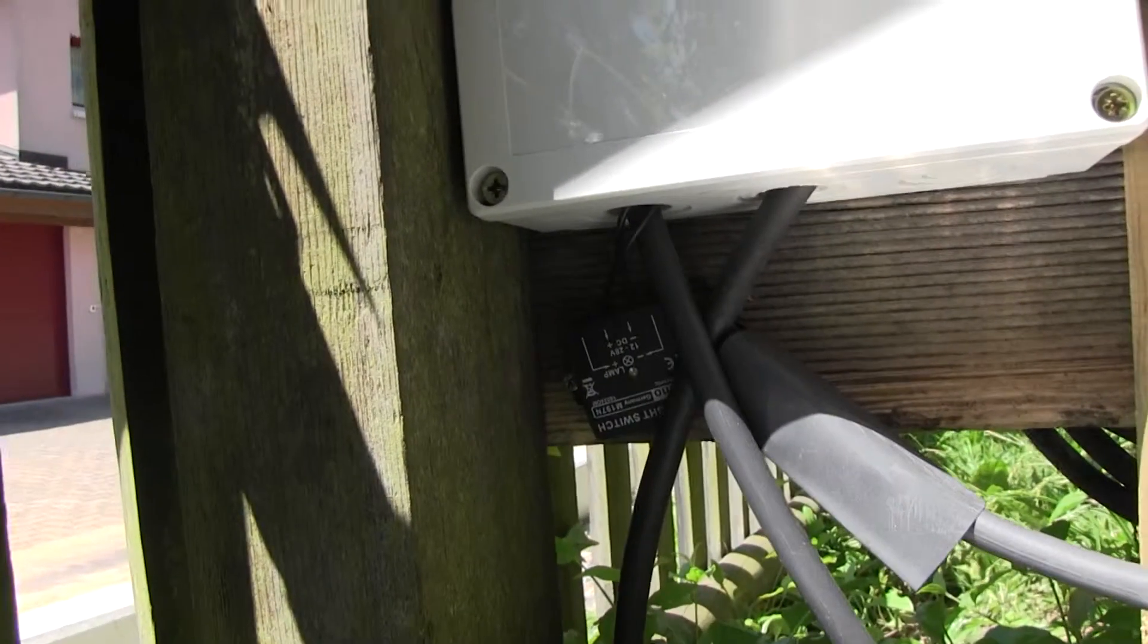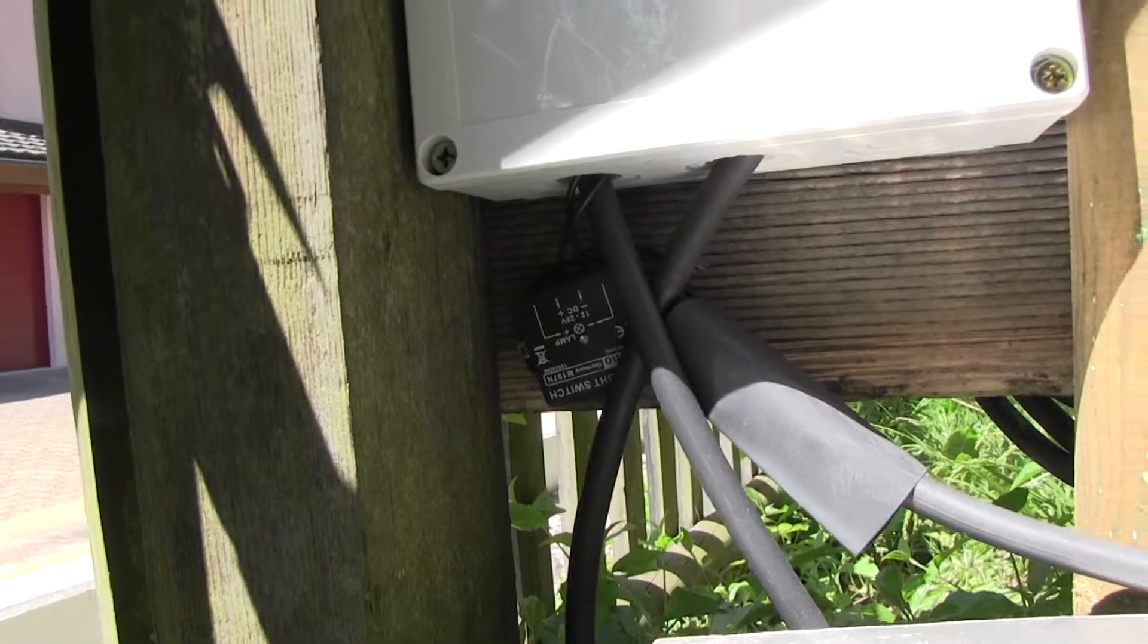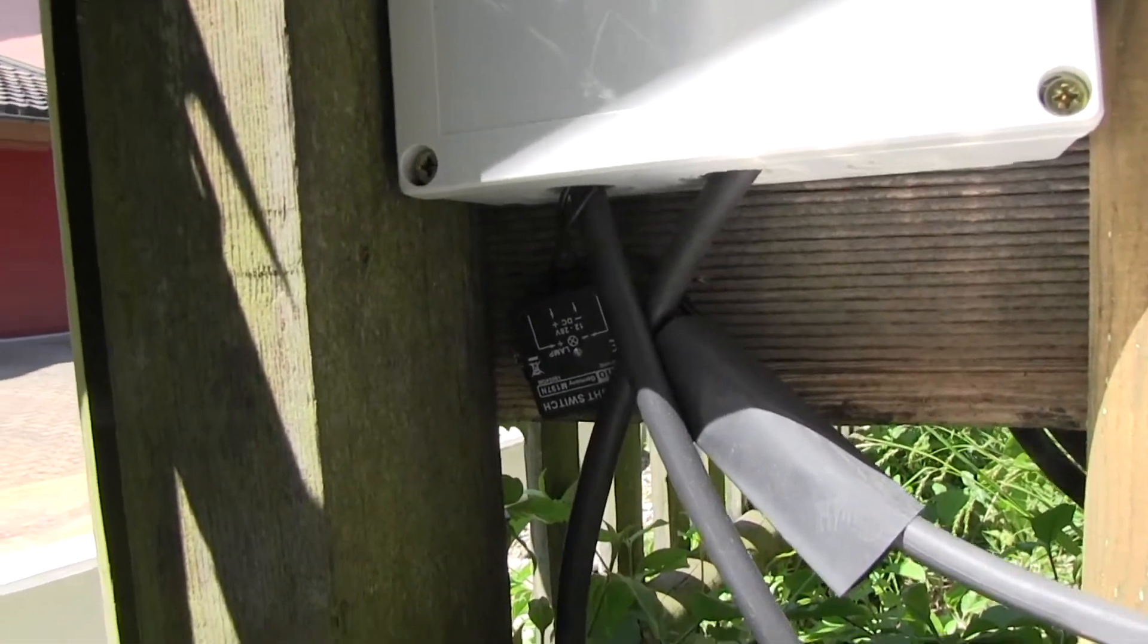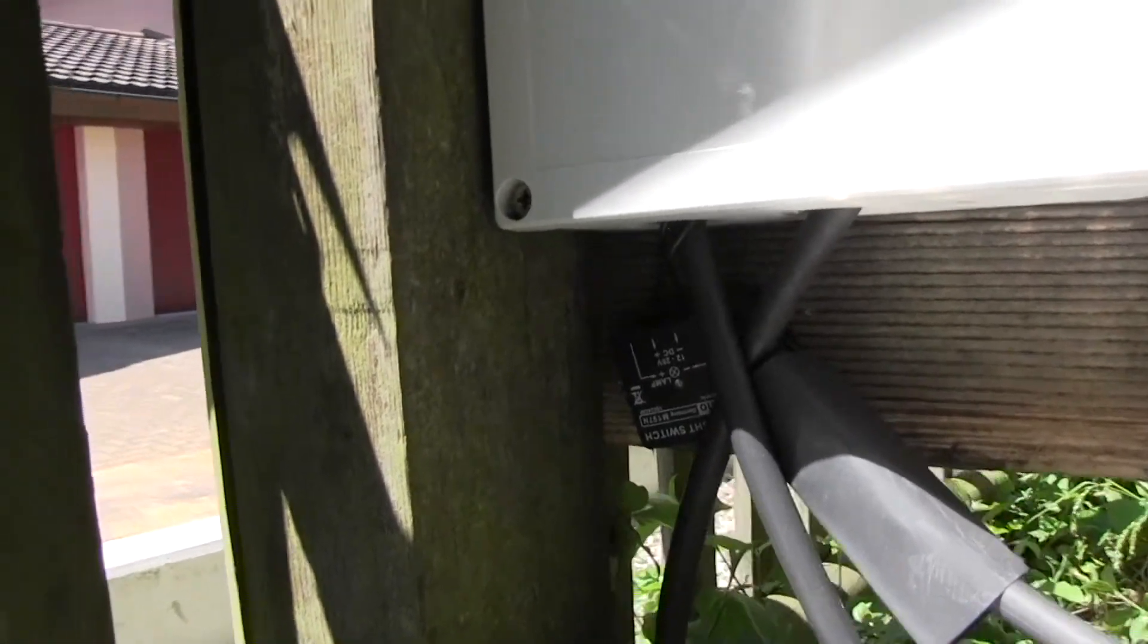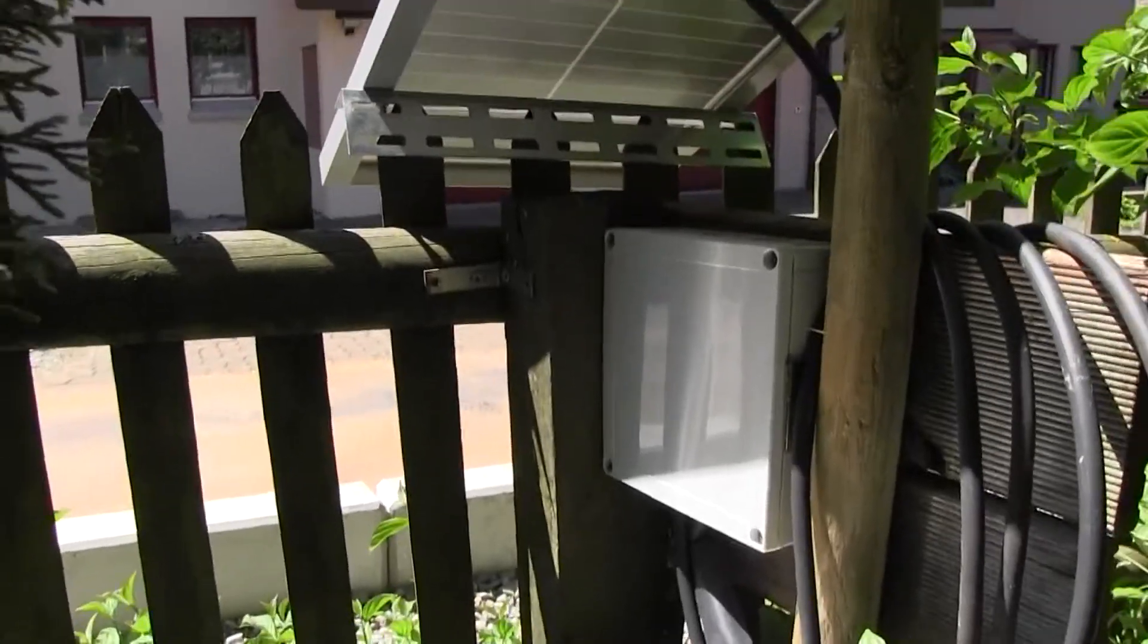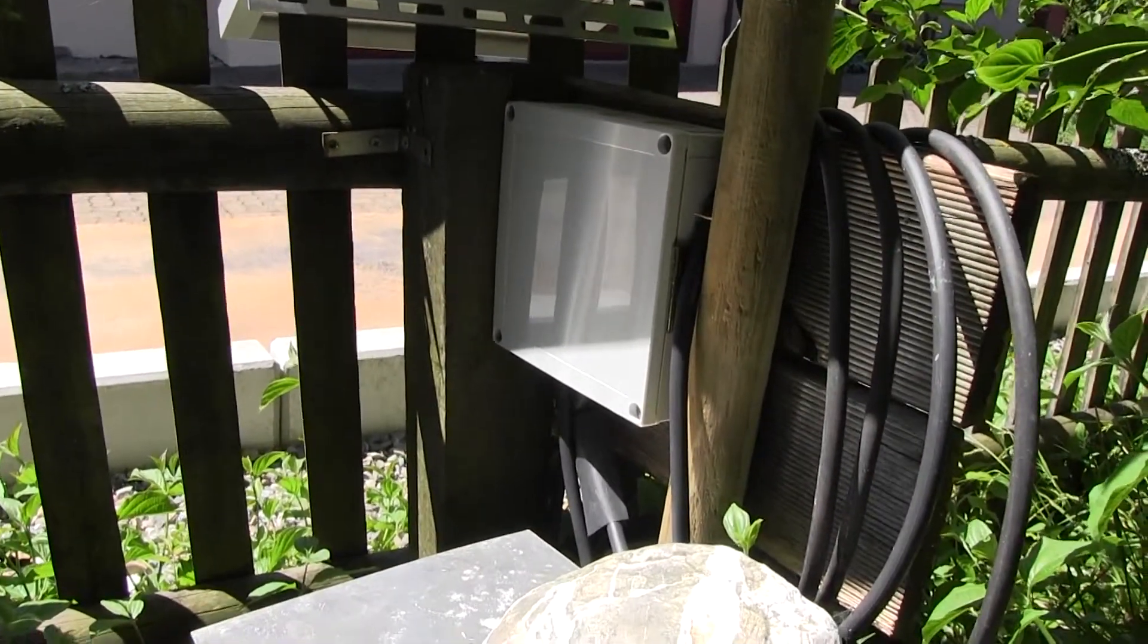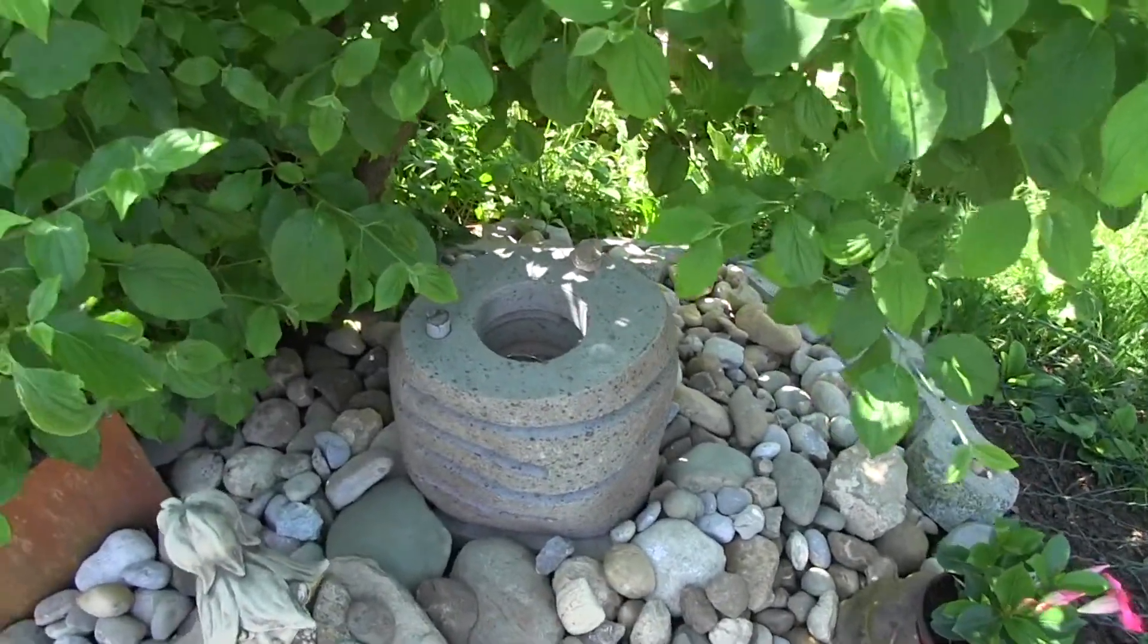And underneath this box here you can see the light sensor. And this light sensor works automatically. The light falls below I think it's 20 lux, it automatically switches on the LED light. And in the morning when the sun goes up, there's more than 20 lux, the light is switched off again. Let me close this up and I will go inside to show you schematically how this is wired up.